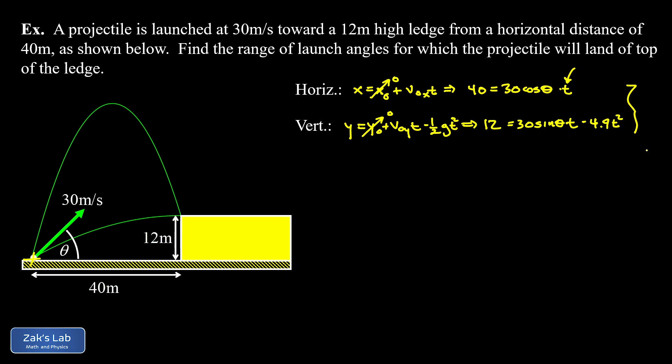That's going to create an equation where the only unknown is θ, which in principle we can solve and we'll get our range of angles out of that.